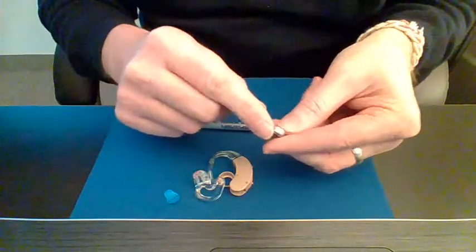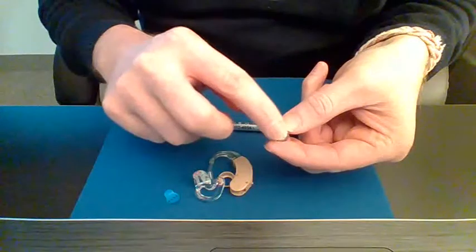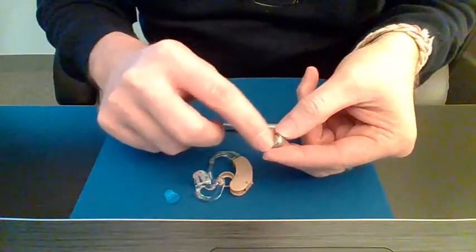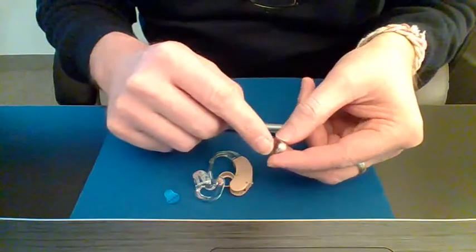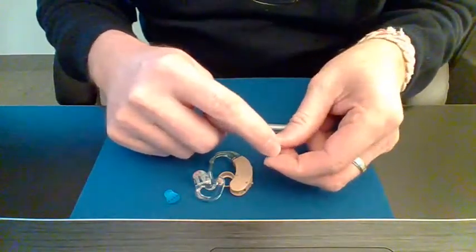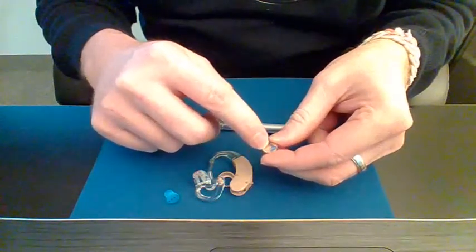And then you've got a beveled edge. The beveled edge is the bottom of the hearing battery. So the flat part, that's the top.